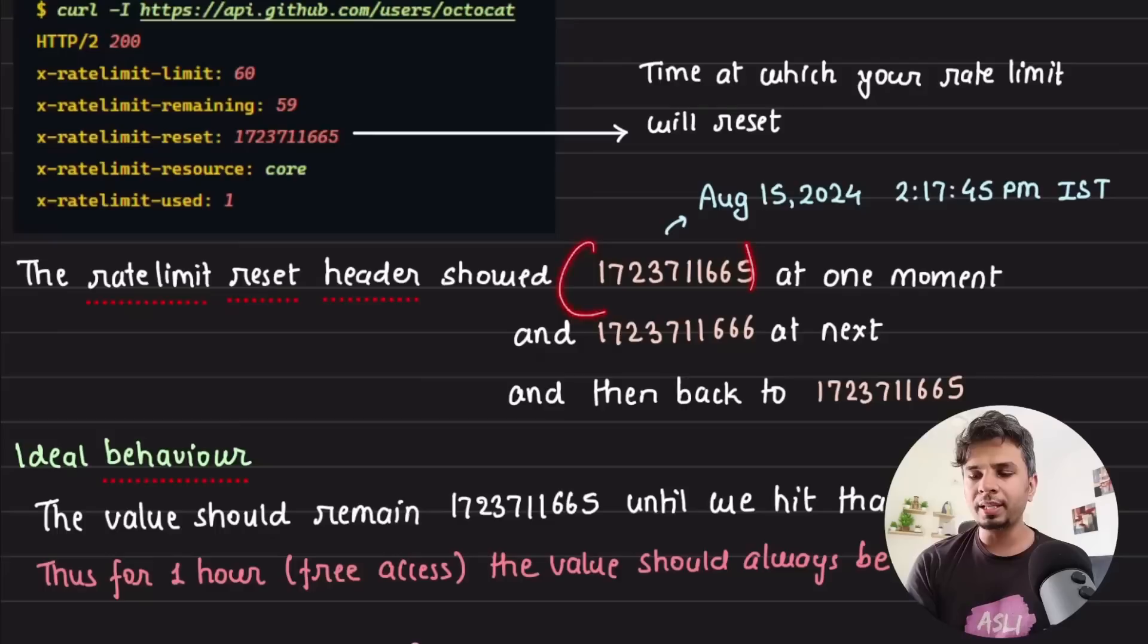So it showed 1723711665 at one moment, then the next moment it showed 1723711666, and then it moved back to 1723711665.